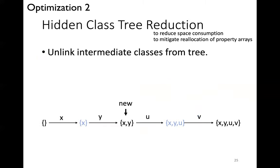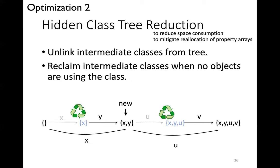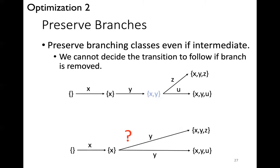Another optimization is hidden class tree reduction. This reduces space consumption due to hidden classes. It may also mitigate the allocation of property arrays. For example, let's consider this hidden class tree. Hidden class tree reduction bypasses these intermediate classes and unlinks them from the tree. These unlinked classes will be reclaimed if all objects using these classes die or abandon them.